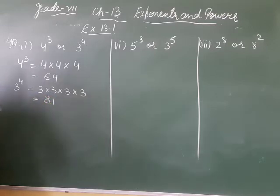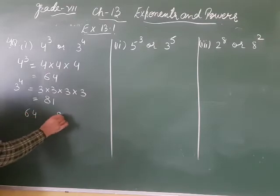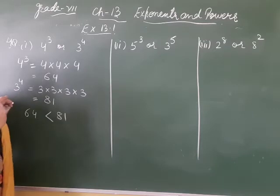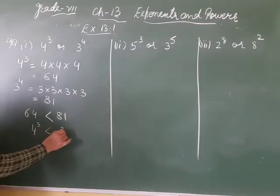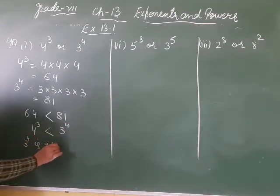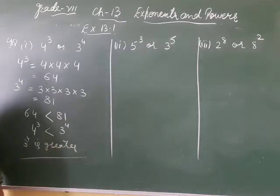Clear? So how much did this become? 81. Now tell me — is 64 greater, or is 81 greater? 81. So 81 came from 3 raised to power 4. That means 4 cubed is 64 and 3 raised to power 4 is 81, so 3 raised to power 4 is greater.